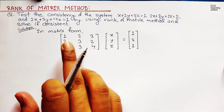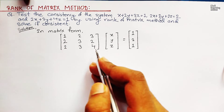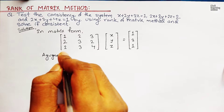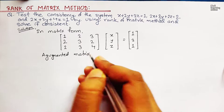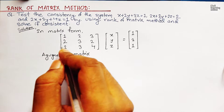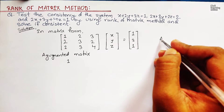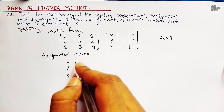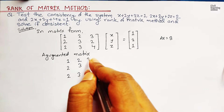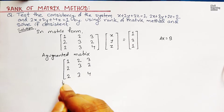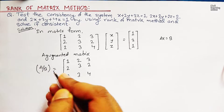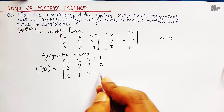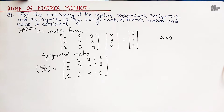Our second step is to write this matrix form into augmented matrix form. On writing the augmented matrix of the given matrix, suppose the coefficient matrix is A and the right-hand side is B, so the system is in the form Ax equals B. In augmented matrix form, we write it as [1, 2, 3 | 1; 2, 3, 2 | 2; 2, 3, 4 | 1]. This colon separates the coefficient matrix from the constants. This is the augmented matrix form of the given system of equations.